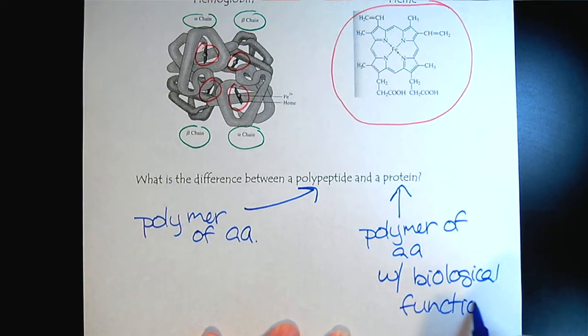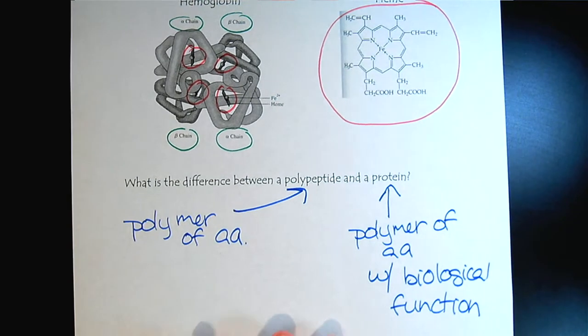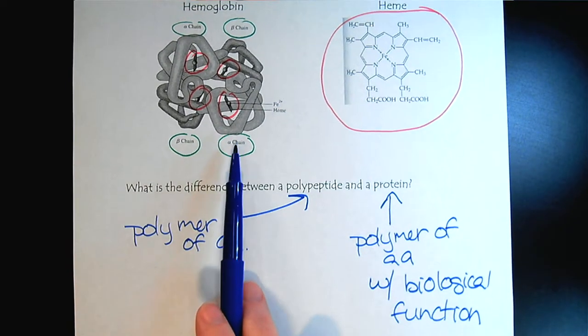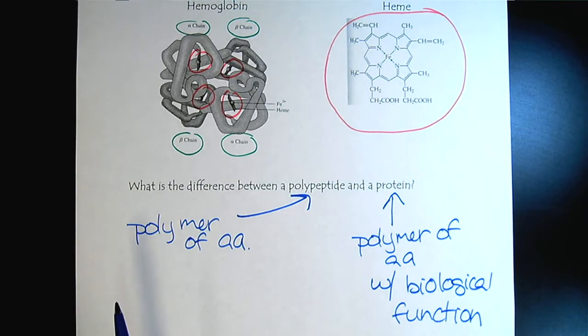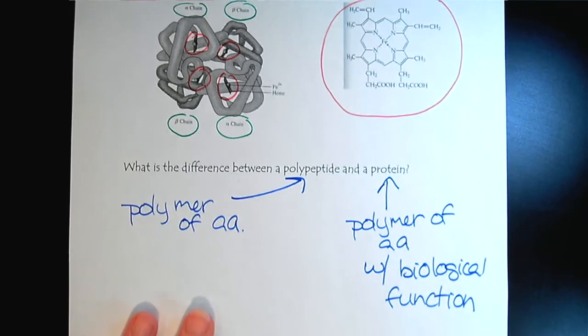Quaternary structure is a great place to talk about that, because if we had any one of these four polypeptides by itself, it's not going to transport oxygen molecules. We need the combination.